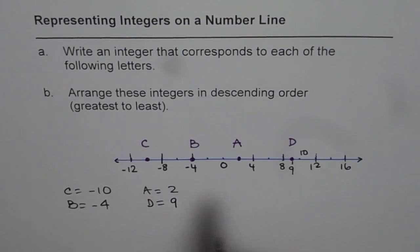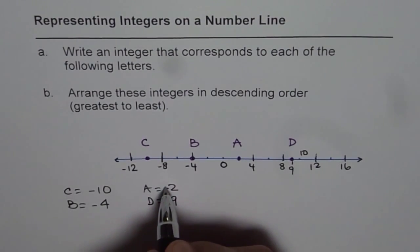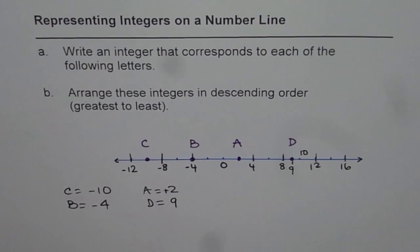Now for positive numbers, we may or may not write positive. So you may write positive 2 or just the number itself. If you write the number itself, it means positive 9.